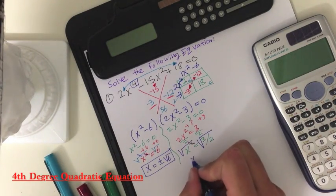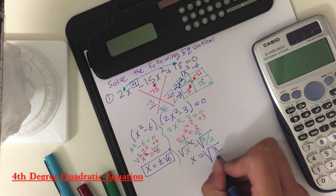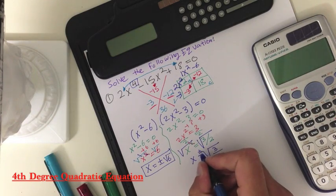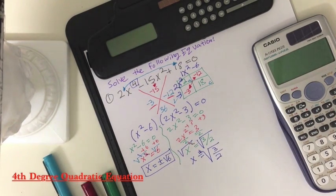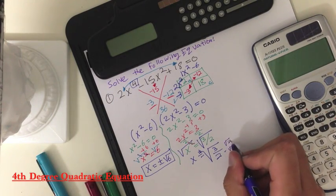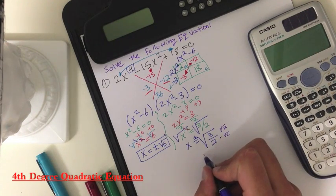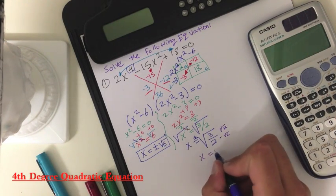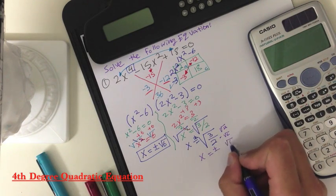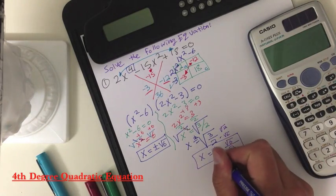And your answer will be x equals square root of 3 over 2. This is not your final answer yet, because it will be plus and minus square root of 3 over 2. You can simplify this even further by multiplying square root of 2 and square root of 2 to get the denominator out of the square root. So this will equal x equals plus or minus square root of 6 over 2. So this is your other set of two answers.